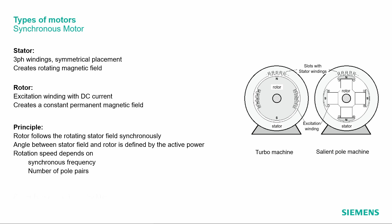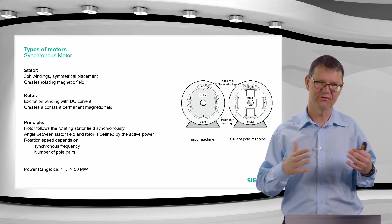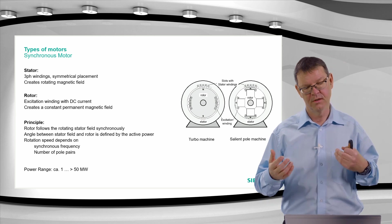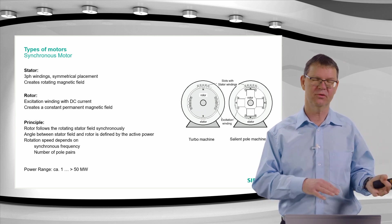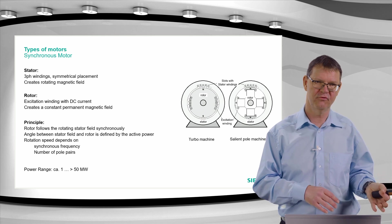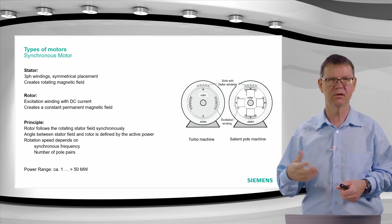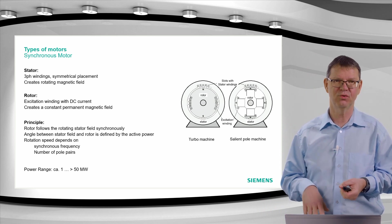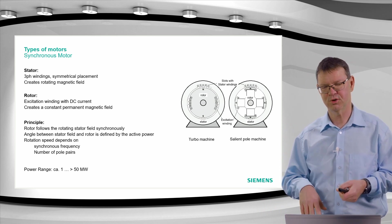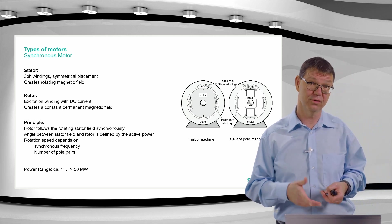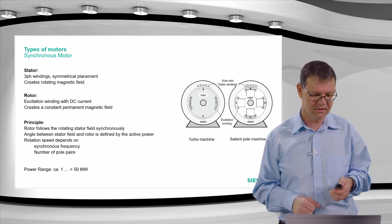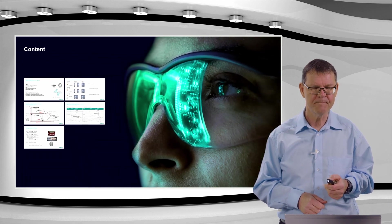The power range of the synchronous motor is roughly from one MVA up to 50 MW or even bigger. A picture shown later documents a machine rated at 65 MW.